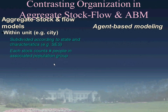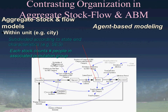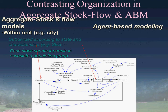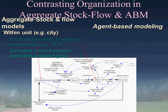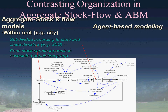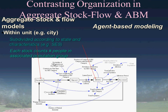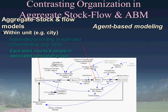For those familiar with system dynamics modeling, it may be fruitful to think of agent-based modeling as a kind of aggregate system dynamics model turned on its head. In a system dynamics model, the model is organized according to people's state and characteristics—for example, we divide the population into susceptibles, exposed, infectives, and recovered, and count the number of individuals in each category. If we wish to distinguish susceptible males from susceptible females, we would create another stock.